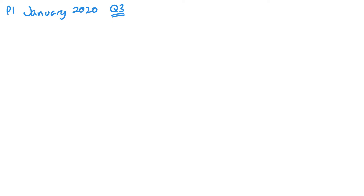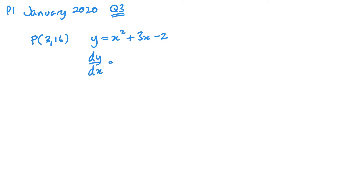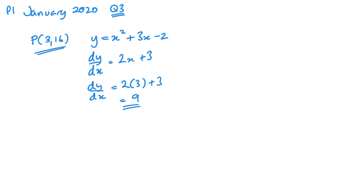As promised, the January 2020 P1 paper — question 3. I'm not going to write the full question out, but I'll summarize the earlier bits and talk through the important parts. The first part of the question is about finding the gradient of the tangent at point P. That's about differentiating, which gives me 2x plus 3, and then substituting in the point. So dy/dx would be 2 lots of 3 plus 3, which gives me 9. That's part A.